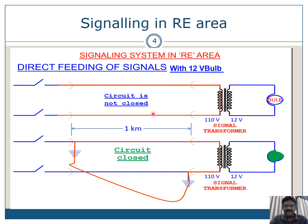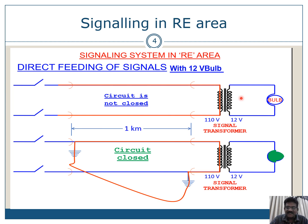This is a simple circuit which explains the direct feeding of signals with a 12 volt bulb. Here the circuit has a relay contact or switch, and a transformer 110 volts to 12 volts. Presently we are not using these transformers. Previously in signaling, 110 volts AC was the primary input and 12 volts AC was the output on the secondary side. Presently we are using LED units, LED signals. Yet the signaling system which was initially calculated based on the transformer continues.